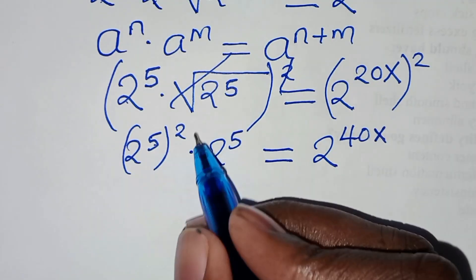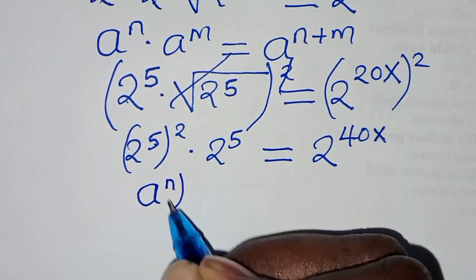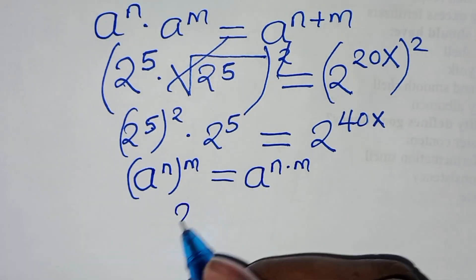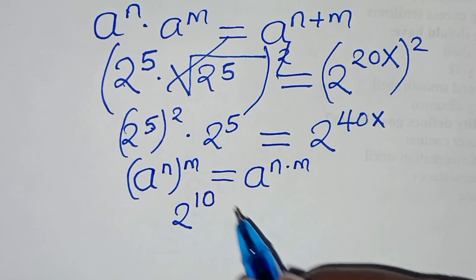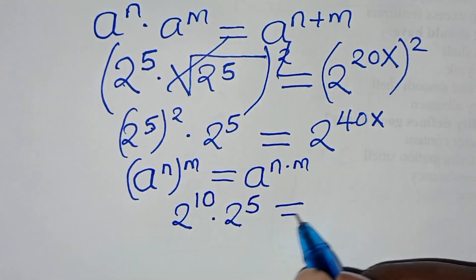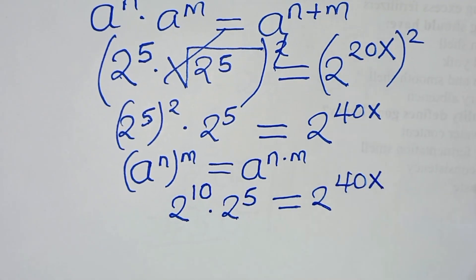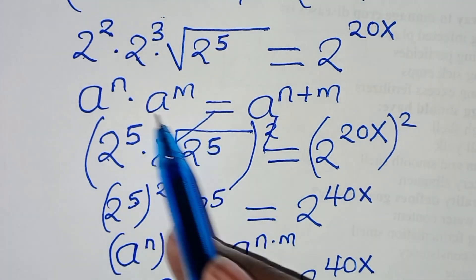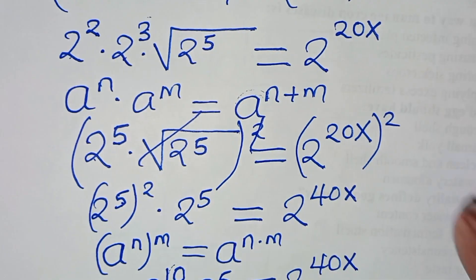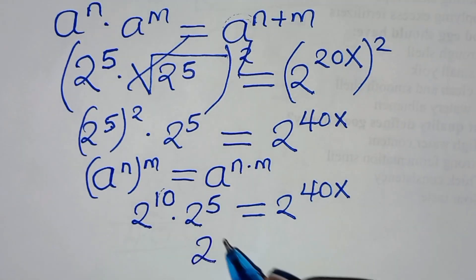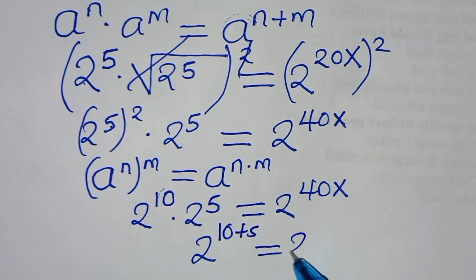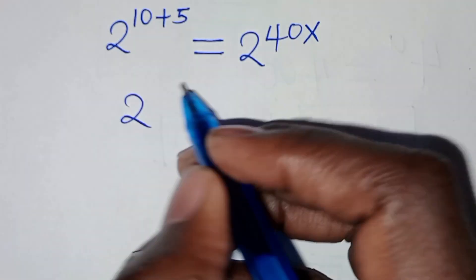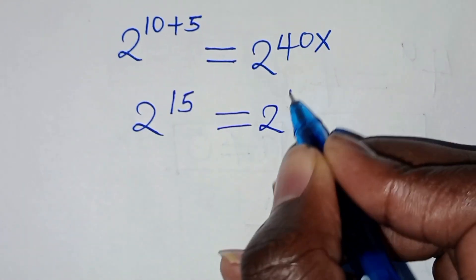Now, 2 to the power of 5 raised to the power of 2 is in the form of a to the power of n raised to the power of m, which we can express as a to the power of n times m. So here we have 2 to the power of 5 times 2, which is 10, times 2 to the power of 5. This is equal to 2 raised to the power of 40x. We then have 2 to the power of 10 times 2 to the power of 5, giving us 2 to the power of 10 plus 5, equal to 2 to the power of 40x.